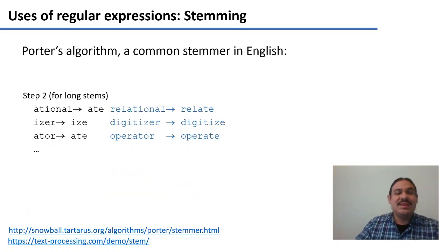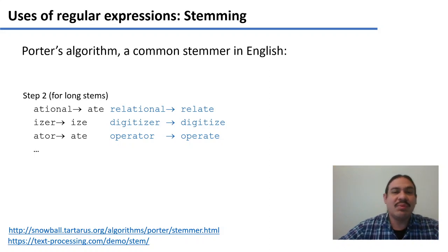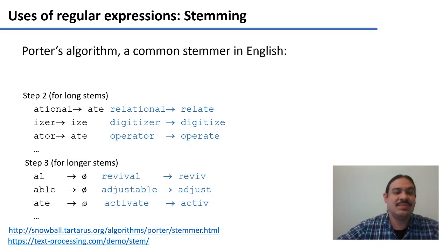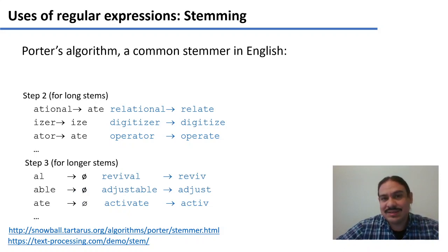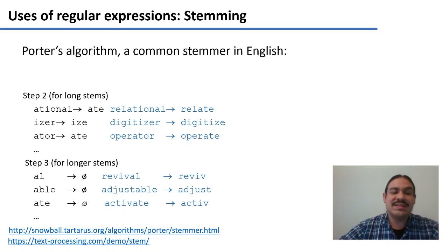In another step, it takes usual morphemes and simplifies them. For example, 'relational' is replaced with 'relate.' 'Digitizer' becomes 'digitize.' 'Operator' becomes 'operate.' It also takes some other morphemes and transforms them to zero. For example, 'revival' — it removes the suffix so the stem becomes 'reviv.' 'Adjustable' becomes 'adjust.' 'Activate' becomes 'active.'